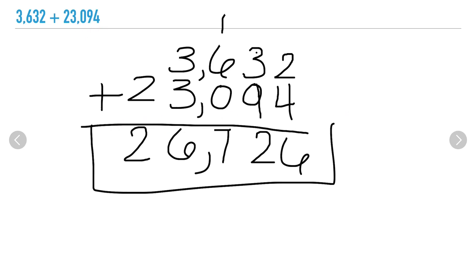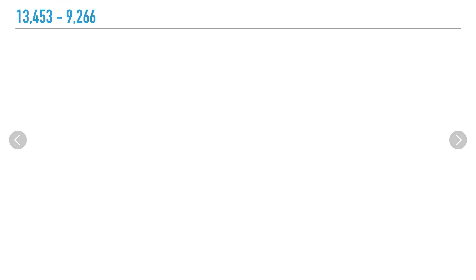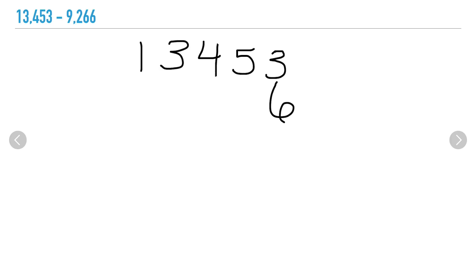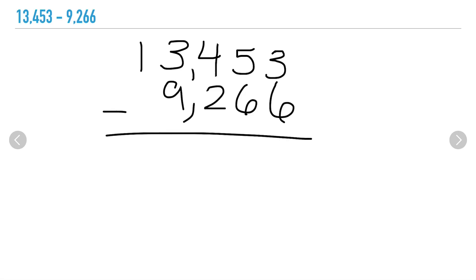Let's try another one. This problem is similar to the second problem where I have more place values in one number than in the other. Let's go ahead and line up our ones and then fill in the rest of our first number, then do the same thing for our second number. Remember, it's okay that the last number does not have a pair — as long as our numbers are lined up by their place value, we are good to go.